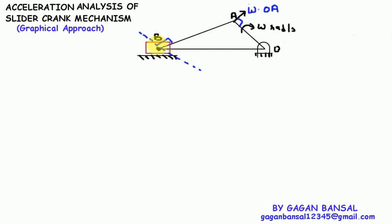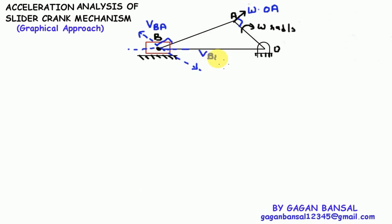In the same way, velocity of point B with respect to A will be perpendicular to link AB — it will be either in the upward or downward direction but perpendicular to AB. The velocity of the slider will be along the line OB, that is velocity of B with respect to O will be along this horizontal line OB.